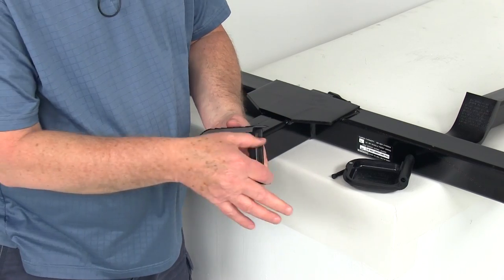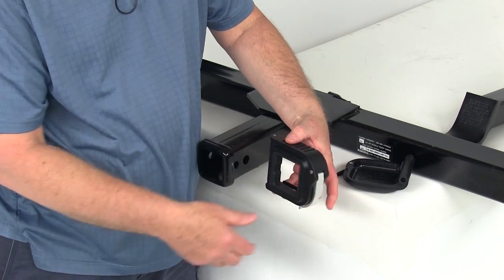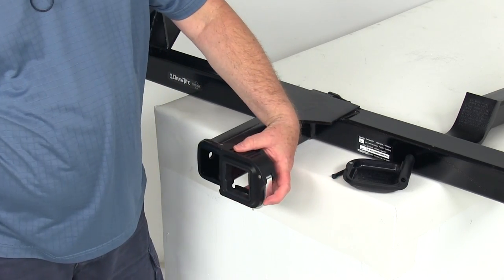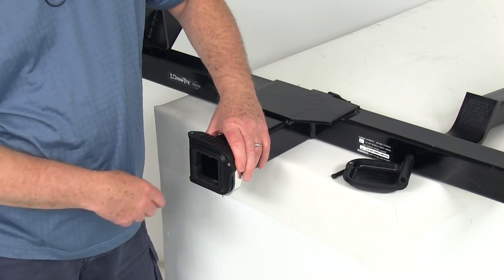And then when you do that, if you notice, there's an opening right here. So what you'll do is start on the passenger side of the vehicle and just slide this across the collar on the hitch.